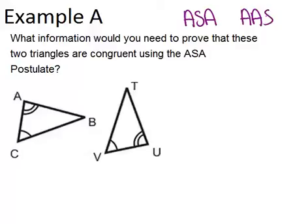So in example A, it says, what information would you need to prove that these two triangles are congruent using the ASA, which stands for angle-side-angle, postulate? So you should notice that in this picture, we're already given two pairs of angles that are congruent.